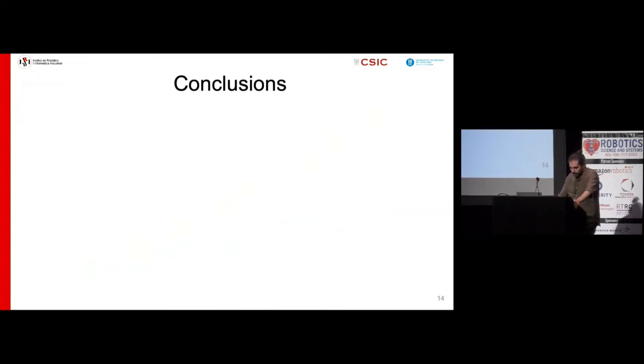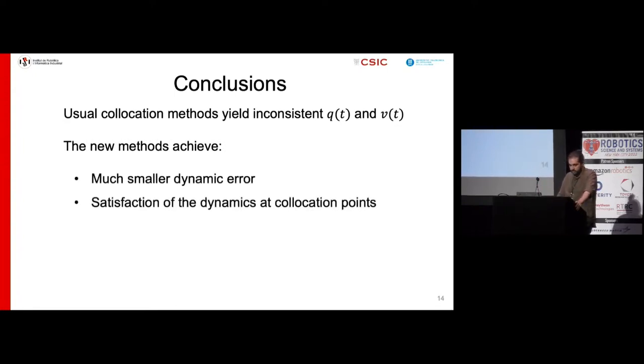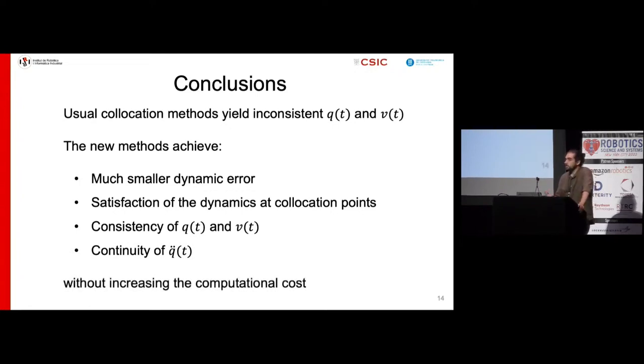So, to wrap up, we can conclude that usual collocation methods yield inconsistent configuration and velocity trajectories, whereas the new methods we propose achieve trajectories with a much smaller dynamic error, satisfaction of the dynamic equation at the collocation points, consistency of the configuration and velocity trajectories so less control effort will be required to track them, and continuous accelerations which result in smoother trajectories, and all that without increasing the computational cost significantly.